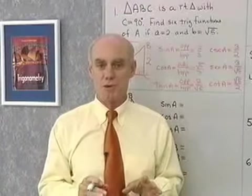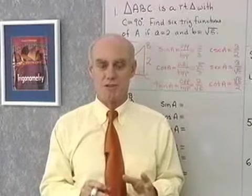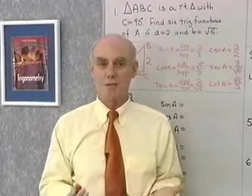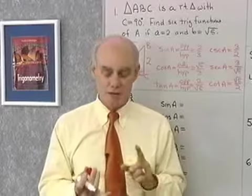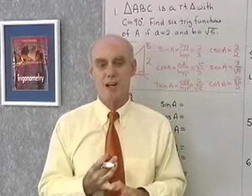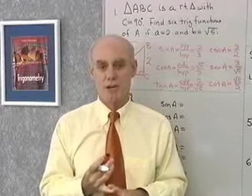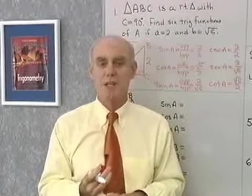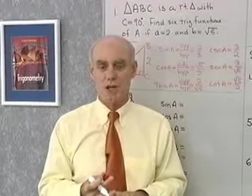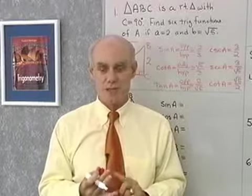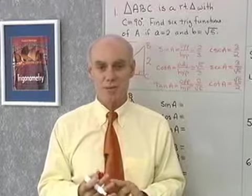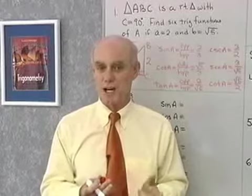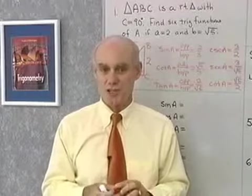You have to do the same thing with this definition that you did with the first — you have to memorize it. The sine of one of the acute angles is always the side opposite divided by the hypotenuse. Cosine is always the side adjacent divided by the hypotenuse, and tangent is always opposite over adjacent.